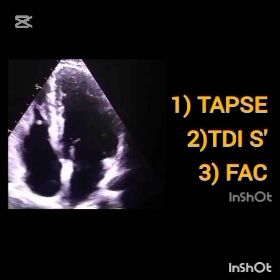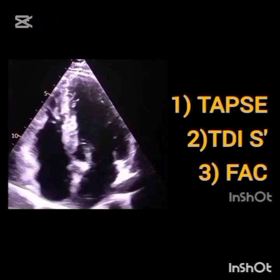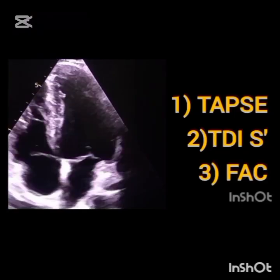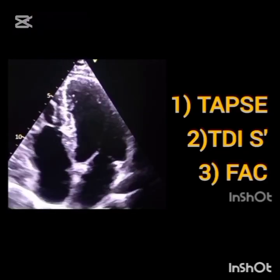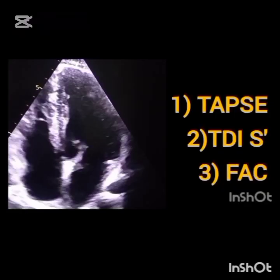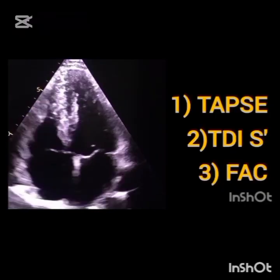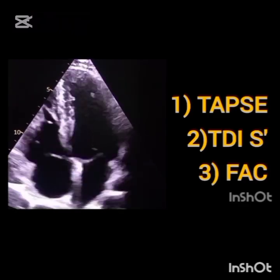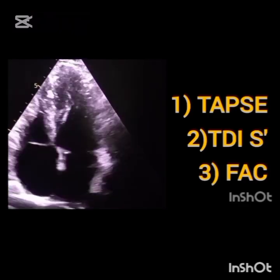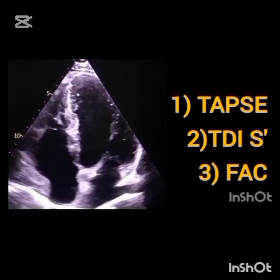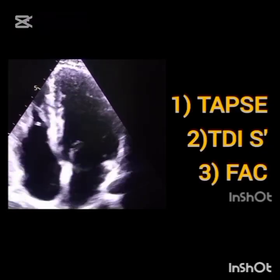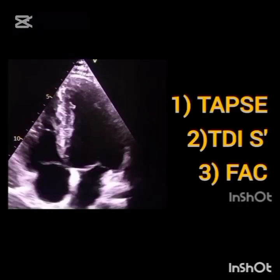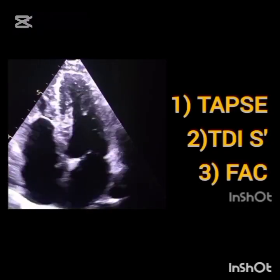This is the easy way to measure the RV diameter accurately. Now let's look at quantitative parameters of right ventricle systolic assessment. The quantitative parameters of the right ventricle are: Number 1 — TAPSE, tricuspid annular plane systolic excursion; Number 2 — tissue Doppler imaging S' wave; Number 3 — FAC, fractional area change. Let's see one by one how each is measured.